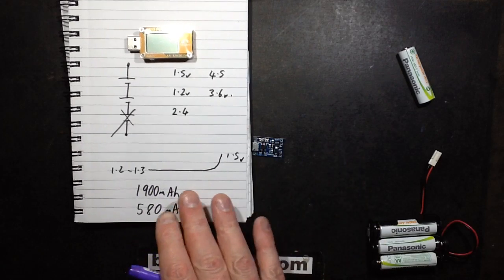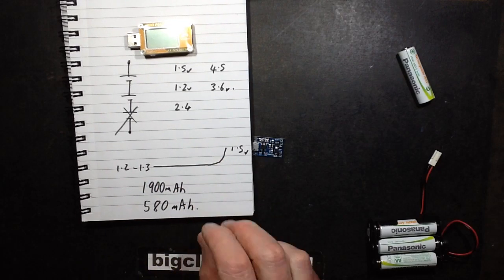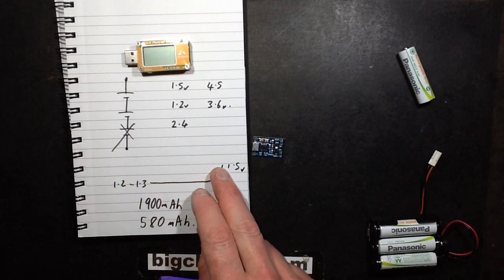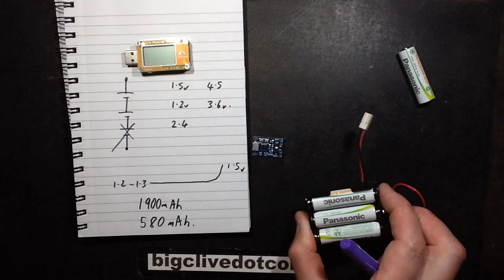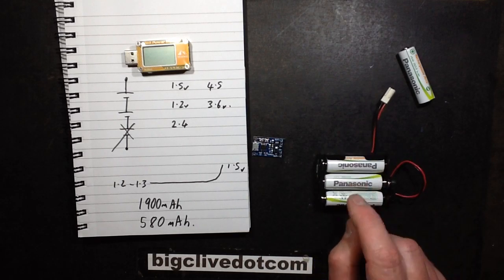Ideally it would have just waited to the very end and then it would have cut off the charge, which would also have been a good thing because it saves them being left trickle charging.